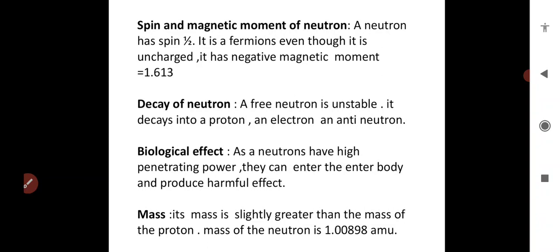This could be asked as a former question: list out the basic properties of neutrons. You can list out the seven properties. One: fundamental particle constituting the nucleus. Two: charge. Three: penetrating power. Four: mass. Five: spin and magnetic moment. Six: decay of neutrons. Seven: biological effect.